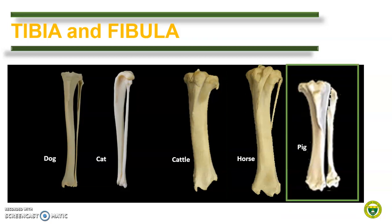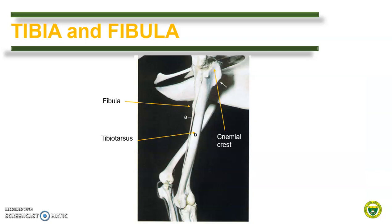In pigs, the tibia and fibula are not fused, same as in carnivores, and the fibula is also the same length as the tibia. The part of the chicken limb where the tibia and fibula is located is frequently referred to as the drumstick. The fibula is thin and splint-like, while the tibia is fused with the proximal row of the tarsal bone forming the tibiotarsus. This bone is characterized by a proximal bony projection called the nemial crest for the attachment of the main extensor muscles of the knee joint. Unlike other long bones of birds, the femur and the tibiotarsus are good sources of bone marrow.